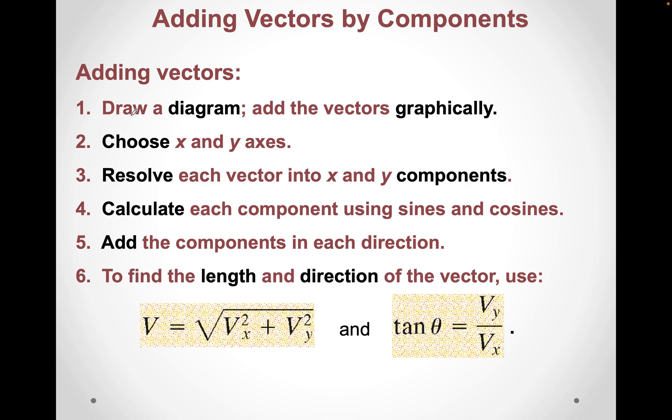Adding vectors, quick recap. Draw a diagram. Add them graphically. You have to choose an X and the Y axis. X is right and left, Y is up and down. Calculate each component, if you want to find the component, using sine and cosine. Add the components in the direction. And then to find the final length and direction, we do the square root. Thank you.